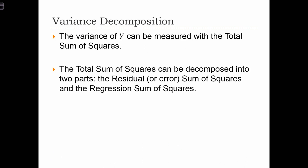So the variance of Y is going to be measured with the total sum of squares. And the total sum of squares is decomposed into the residual or error sum of squares, and another quantity called the regression sum of squares.